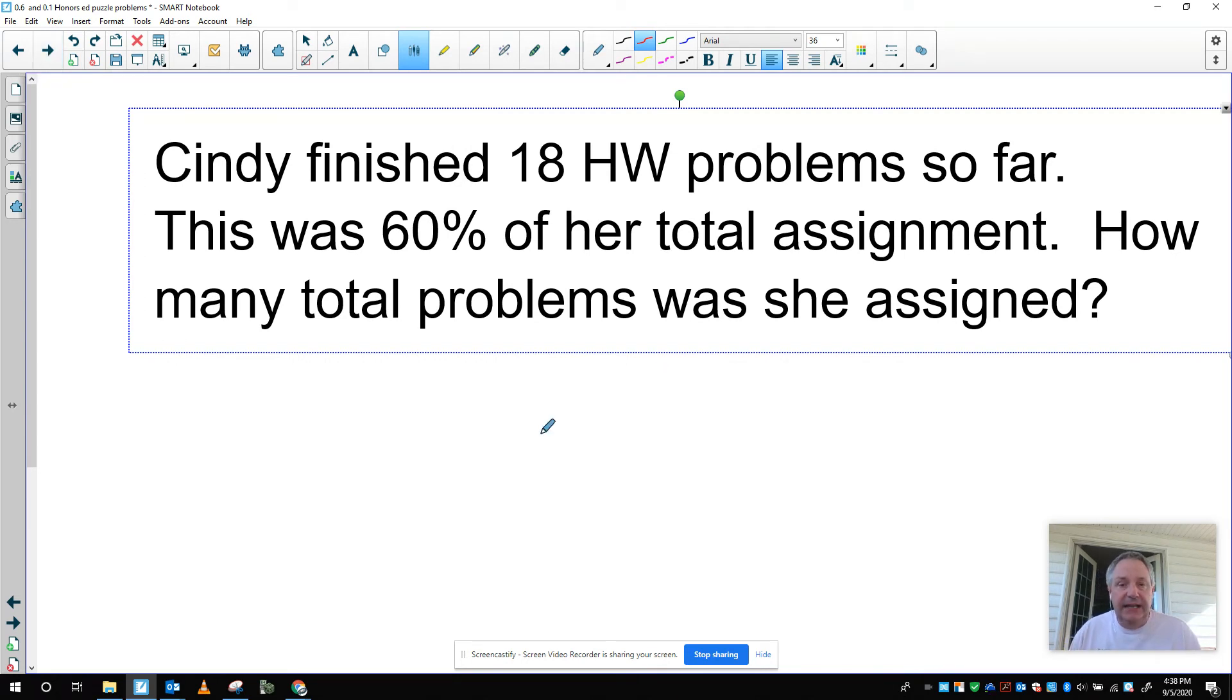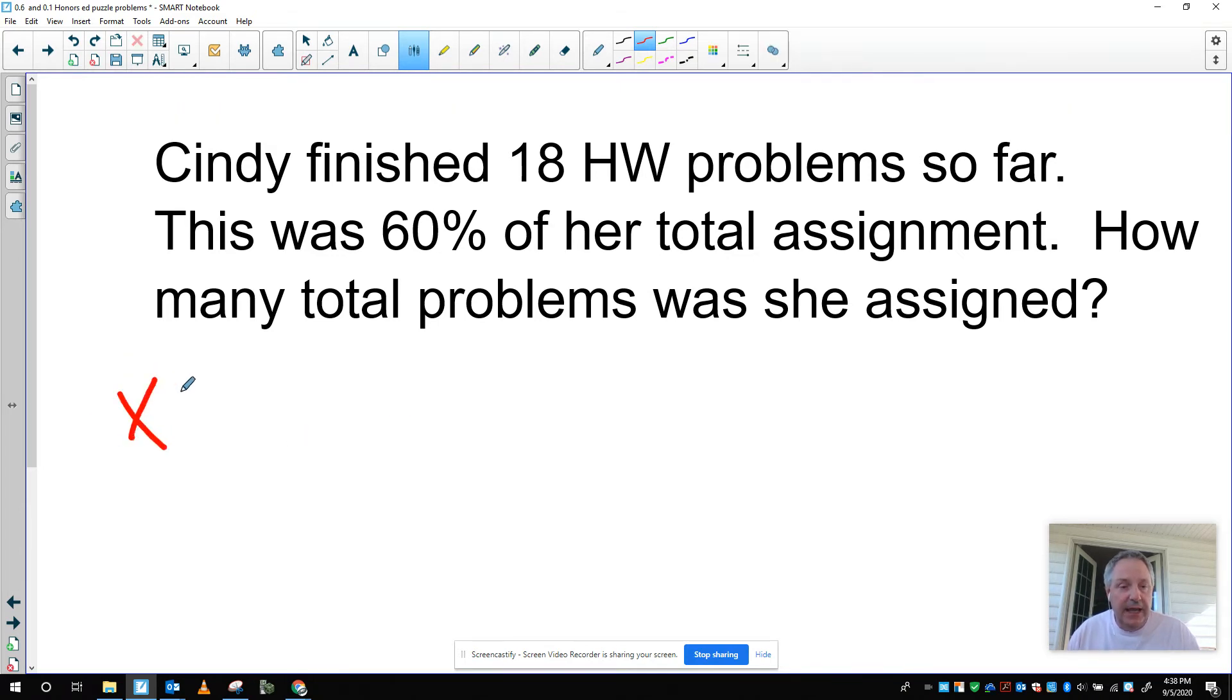Cindy finished 18 homework problems so far. This was 60 percent of her total assignment. How many total problems was she assigned? We want to start by defining a variable. X is the total number of problems she was assigned. Go ahead and try to write an equation and then use that equation to solve.